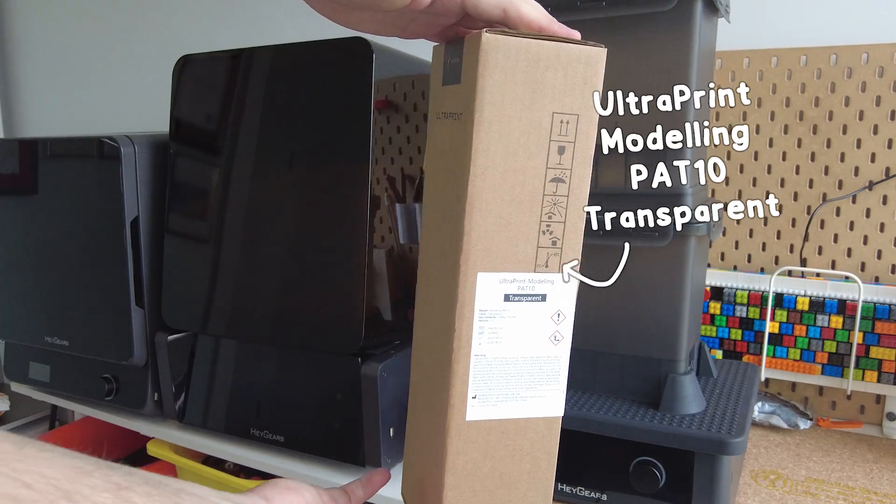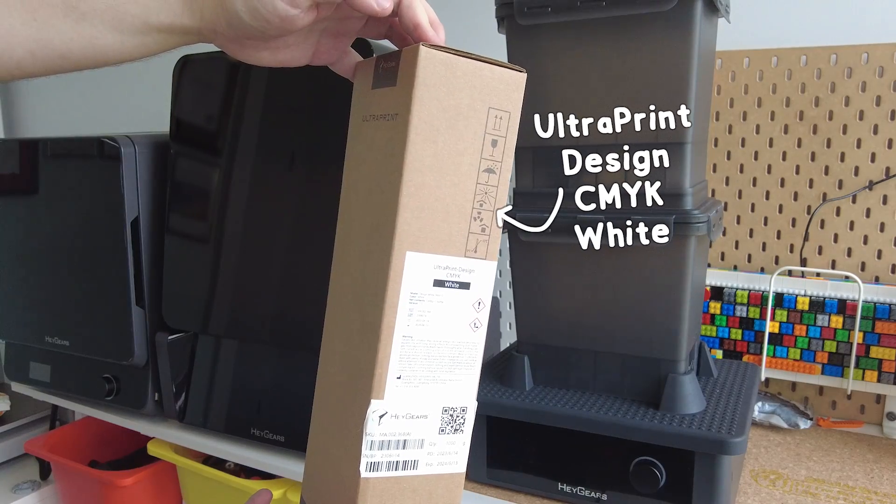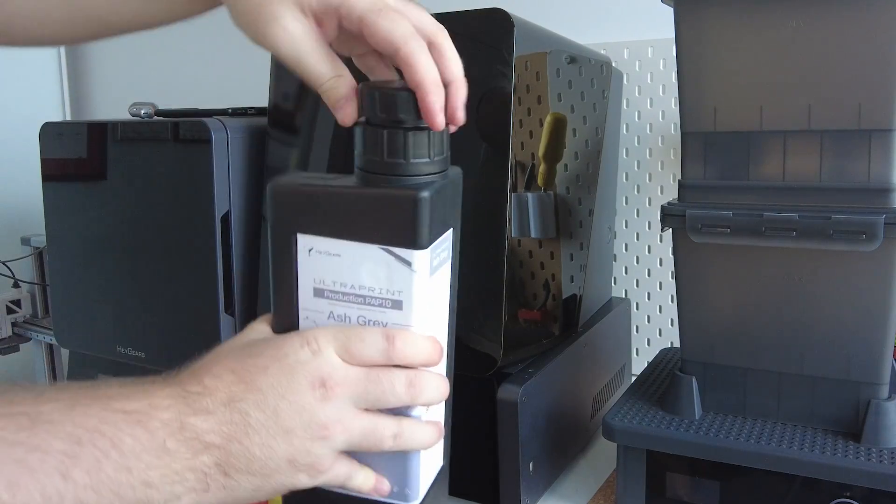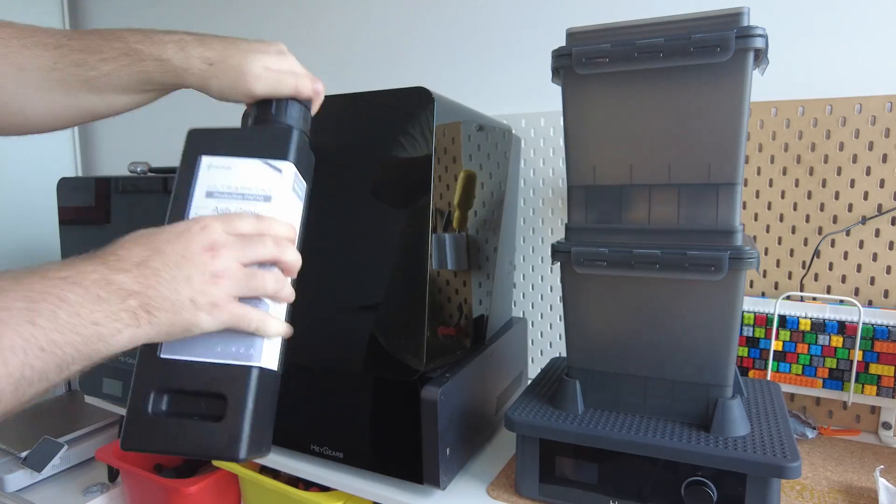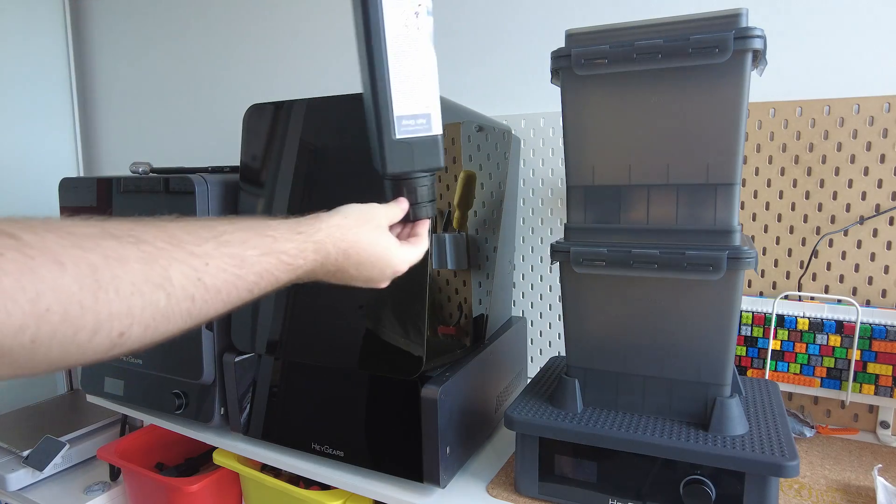They also sent over this transparent resin, two ash grey resins, and a white resin. The cool thing about these bottles is that they have fancy nozzles. I'm not sure what this mechanism is called, but it lets you tip them upside down and load them into the back of the printer without spilling.